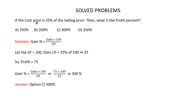If the cost price is 25% of the selling price, then what is the profit percent? You are given 4 options and must find the correct one. Gain percent equals gain multiplied by 100 divided by cost price. We need to find the gain first.